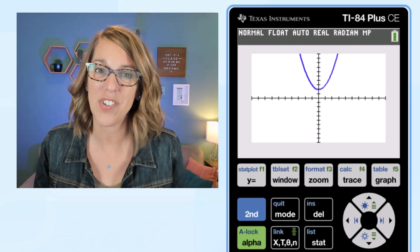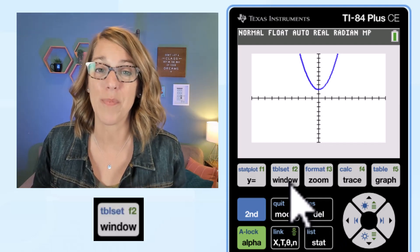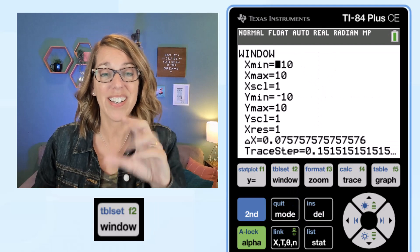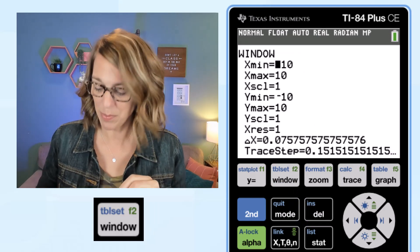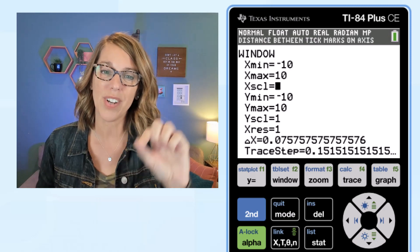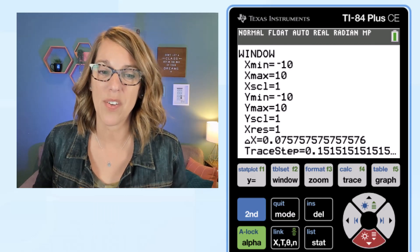Now the other way to adjust your viewing window is to you probably guessed it is to click on this window button and you'll see that that window because I already did a zoom standard has my X min and my X max at negative 10 and 10. The scale is at 1. Those are our tick marks and the same is true with my Y min, Y max, and Y scale.